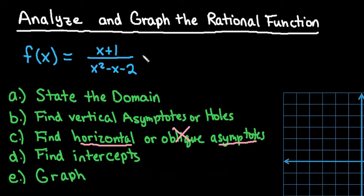So the first thing that I want to do before I start analyzing this is I want to see if I can simplify this rational function. So the top part can't be simplified. It's just x plus 1. The denominator, what we're doing is we're looking for two numbers that multiply together to give me negative 2 that add up to be negative 1.